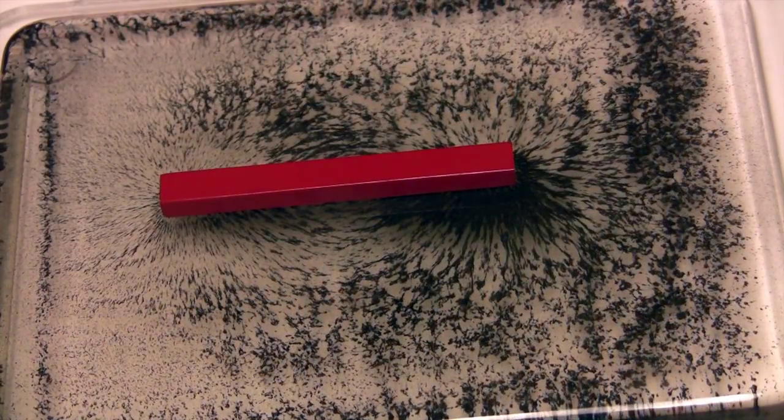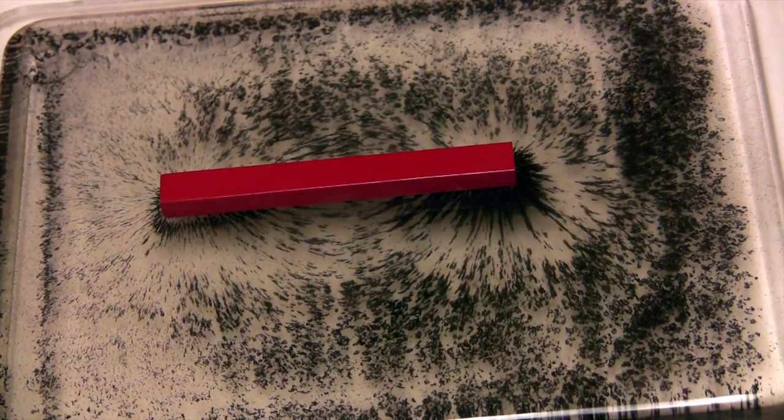This is a bar magnet. When we put the bar magnet on a board containing iron filings, we can see the lines of force of the magnetic field.